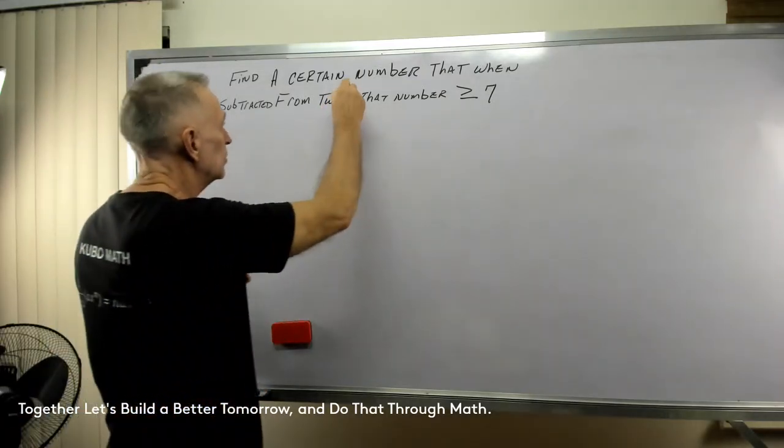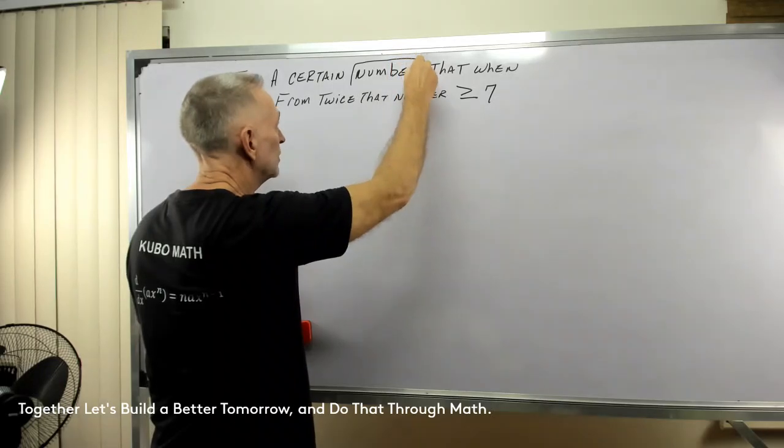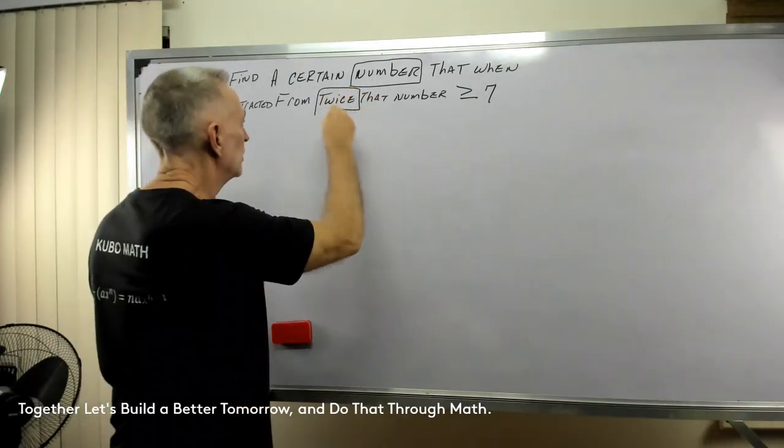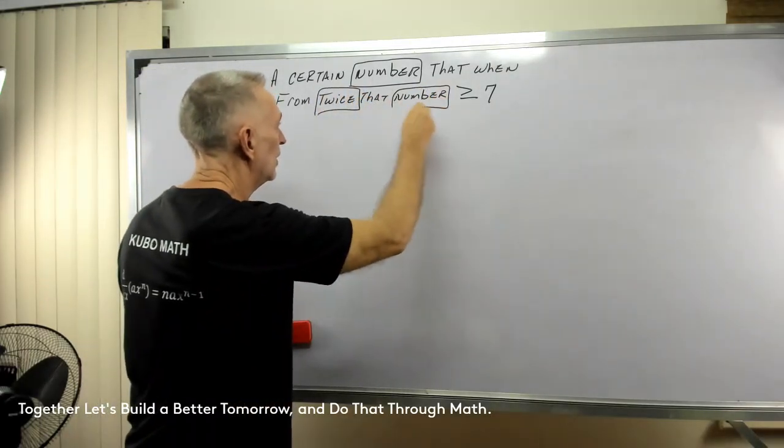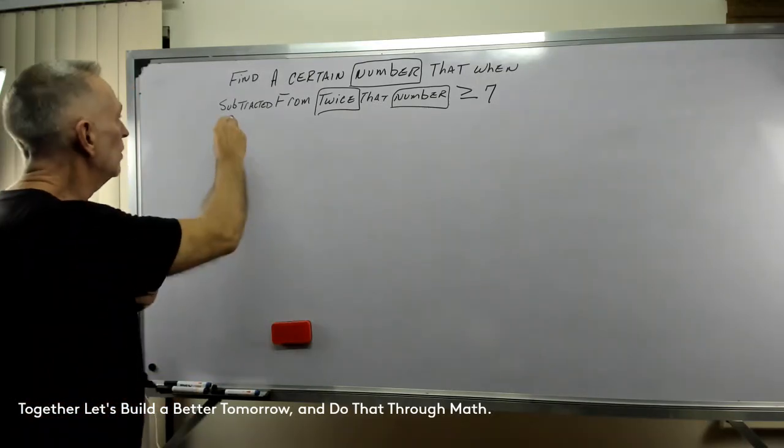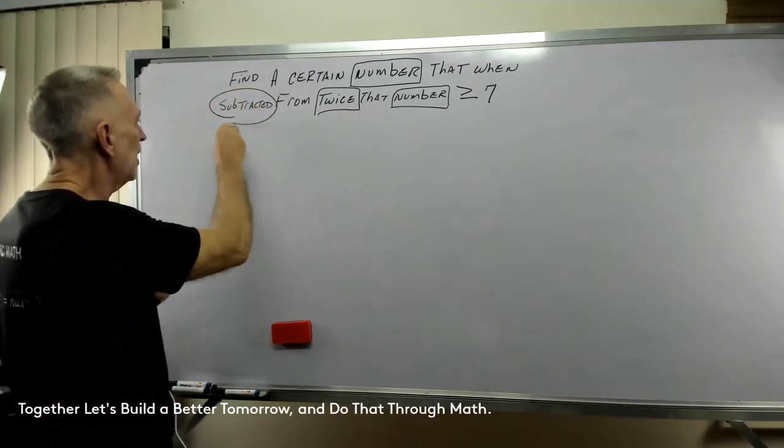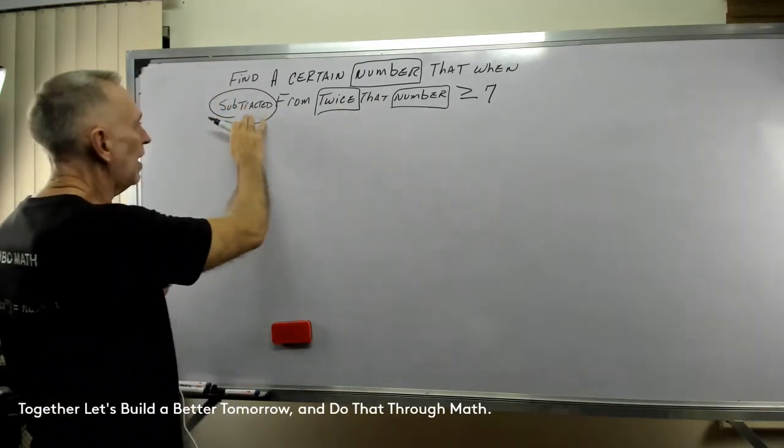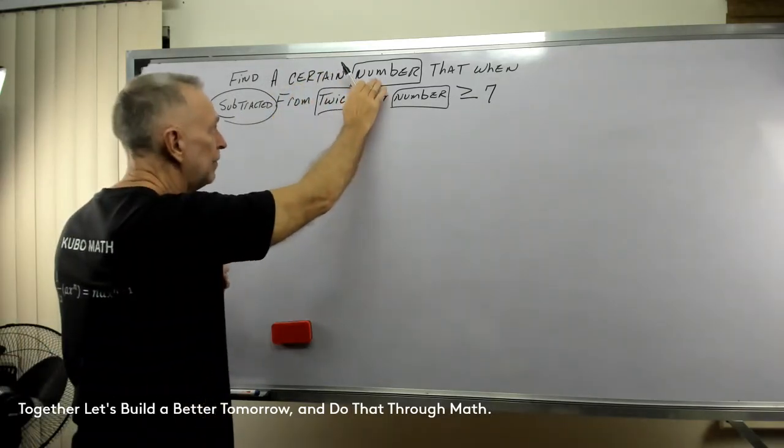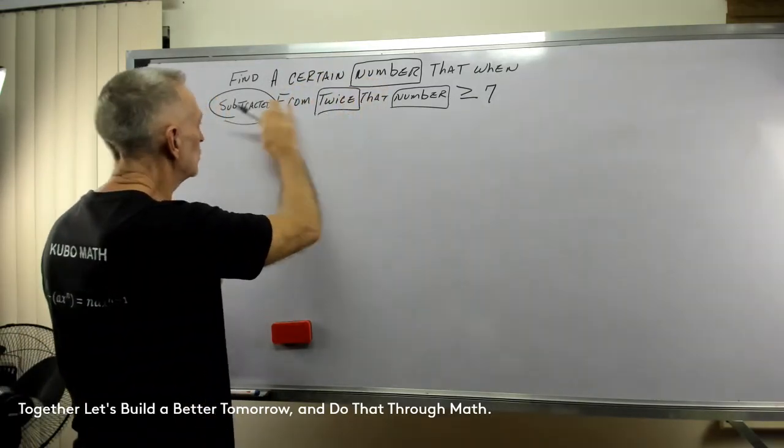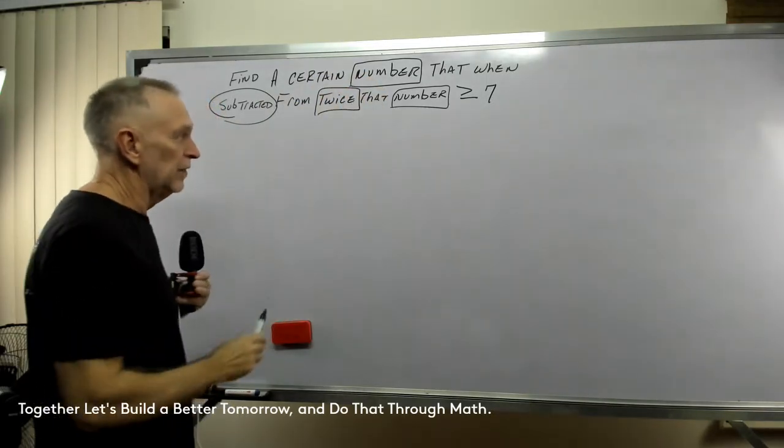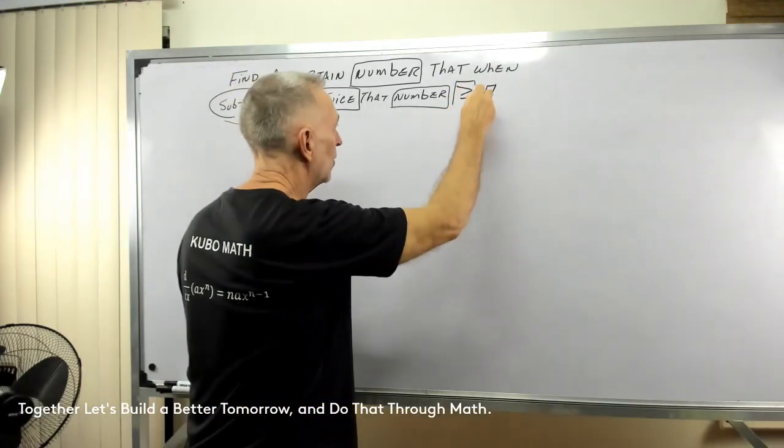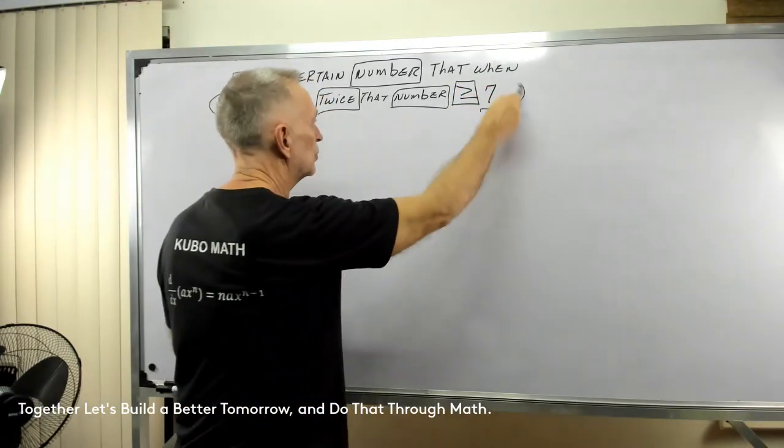Okay, let's put a box around some things that we may know. There's a number. And then there's twice the number. So we see that. And then, what do we see here? Subtracted. So they're taking twice a number and subtracting the same number. Twice the number, subtracted from the number. And they're saying that should be greater than or equal to seven.